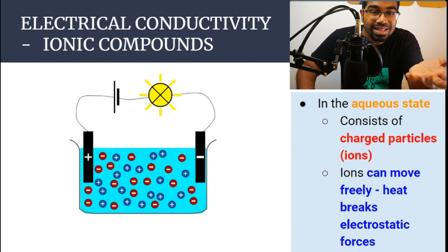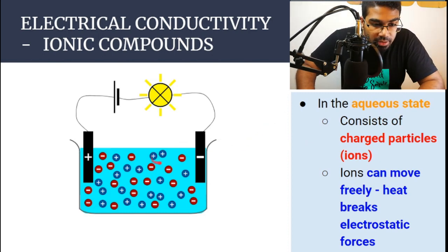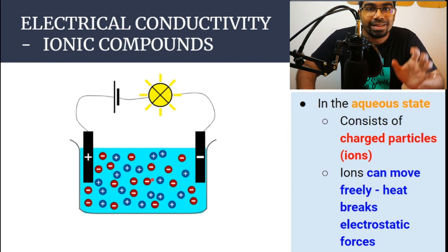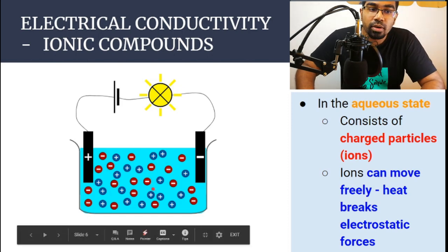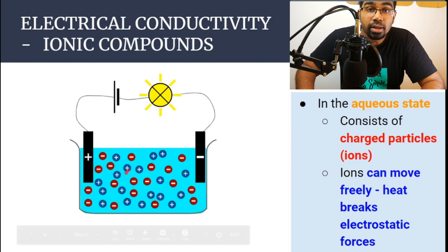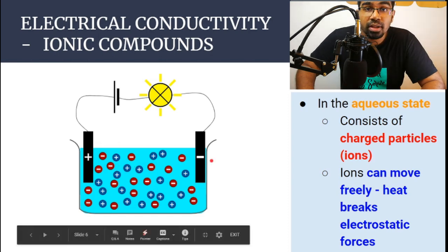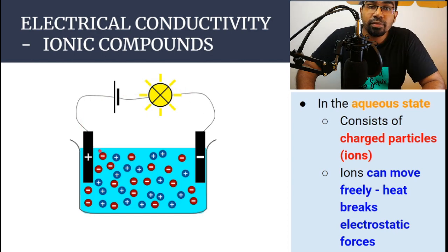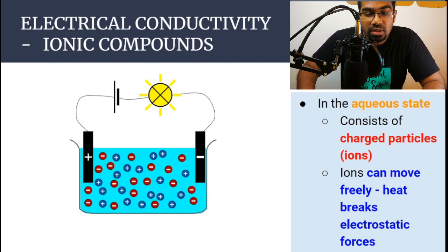What about the aqueous state? The aqueous state is when ionic compounds are dissolved in water to form an aqueous solution. In the aqueous solution, the cations and anions are free to move. When we apply a potential difference, the negative ions move towards the positive terminal and the positive ions move towards the negative terminal, and there will be electron flow in the circuit. Therefore ionic compounds in the aqueous state are able to conduct electricity.